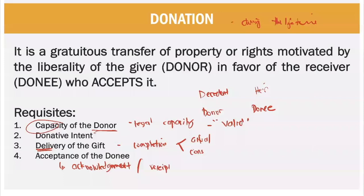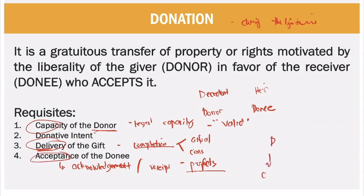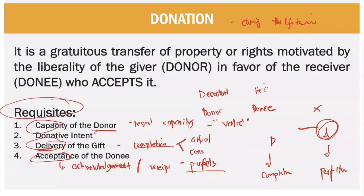The transfer of property by acceptance perfects the donation. The acceptance of the donation is perfected from the moment the donor knows of the acceptance of the donee. Once there is already acknowledgement, the donation is perfected. The completion of the donation is done at the time of delivery, but the perfection of the donation is done at acceptance. If there is no acceptance by the donee, there is no valid donation. All requisites must be present: capacity of the donor, donative intent, delivery of the gift, and acceptance of the donee. Acceptance perfects the whole donation.